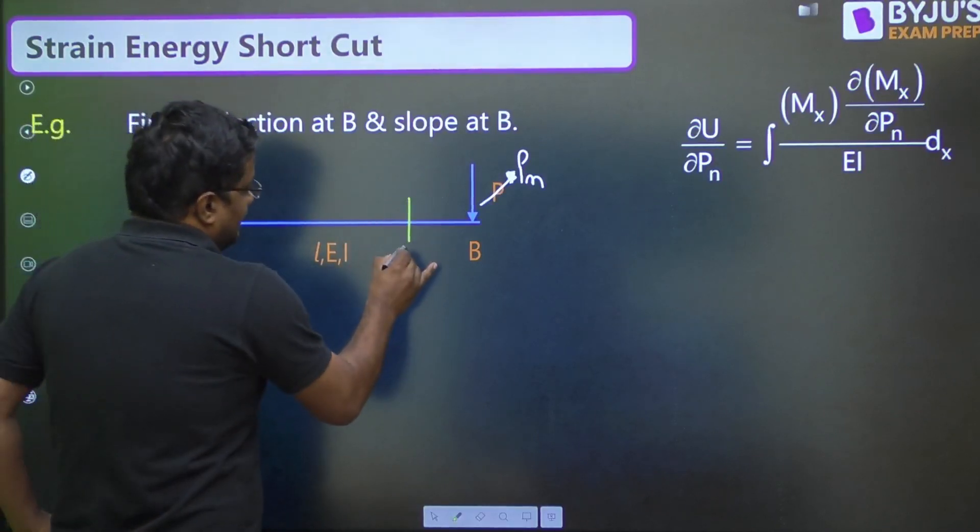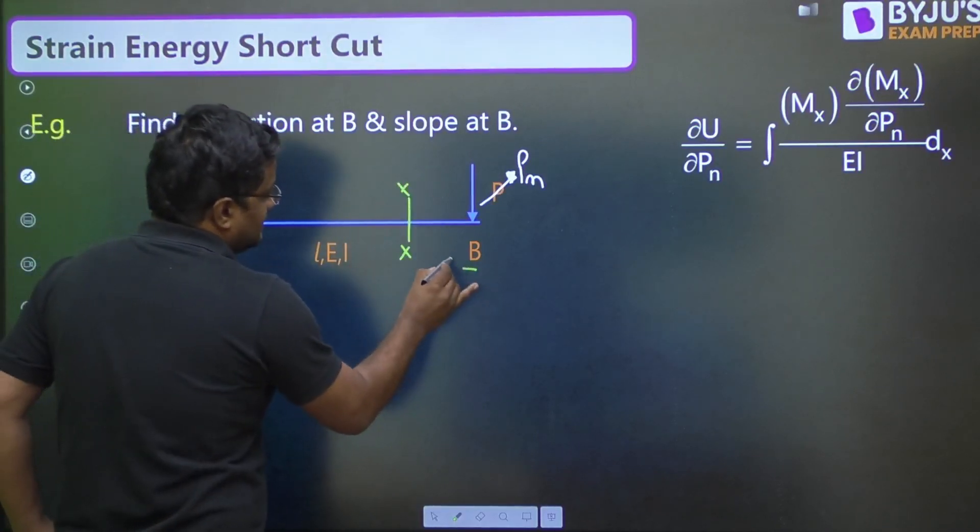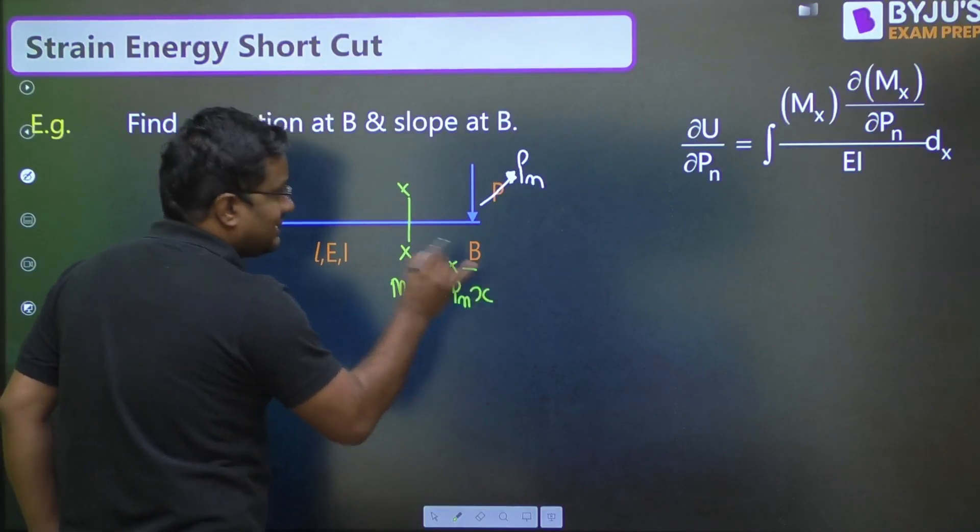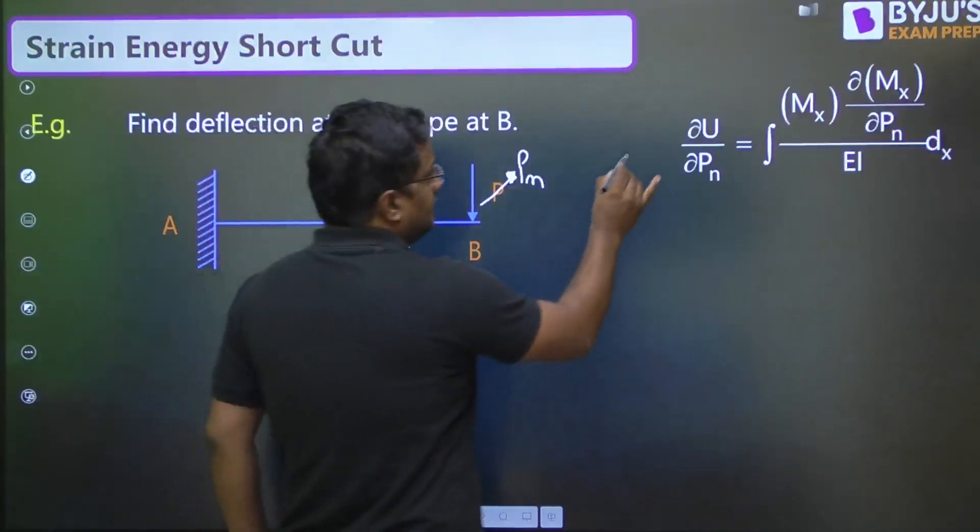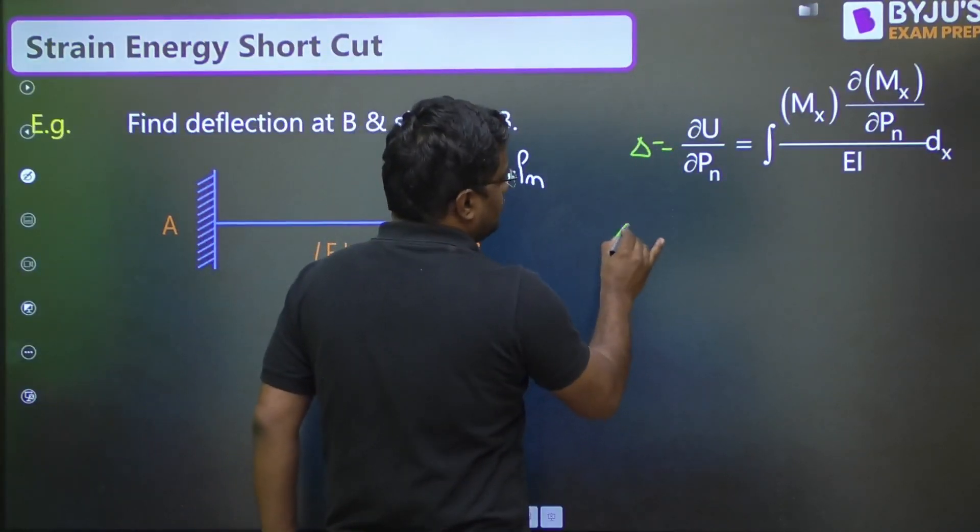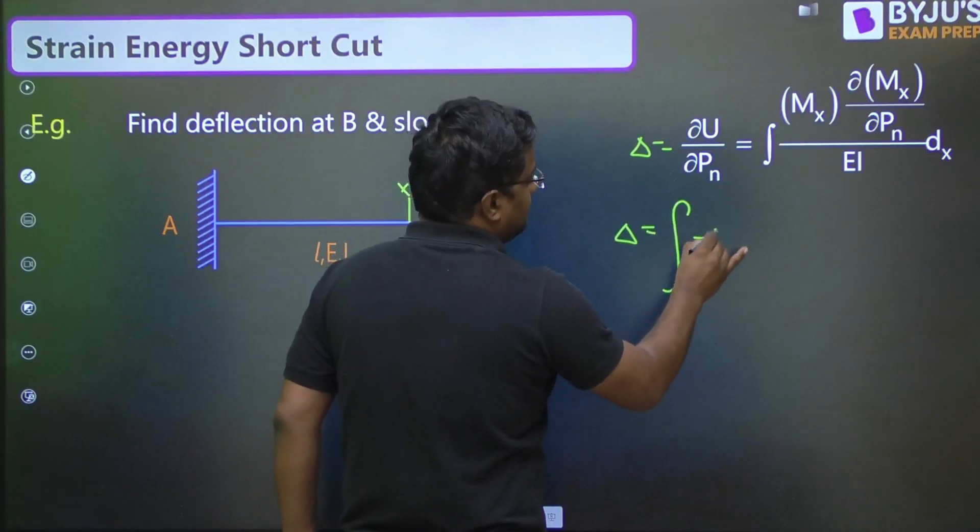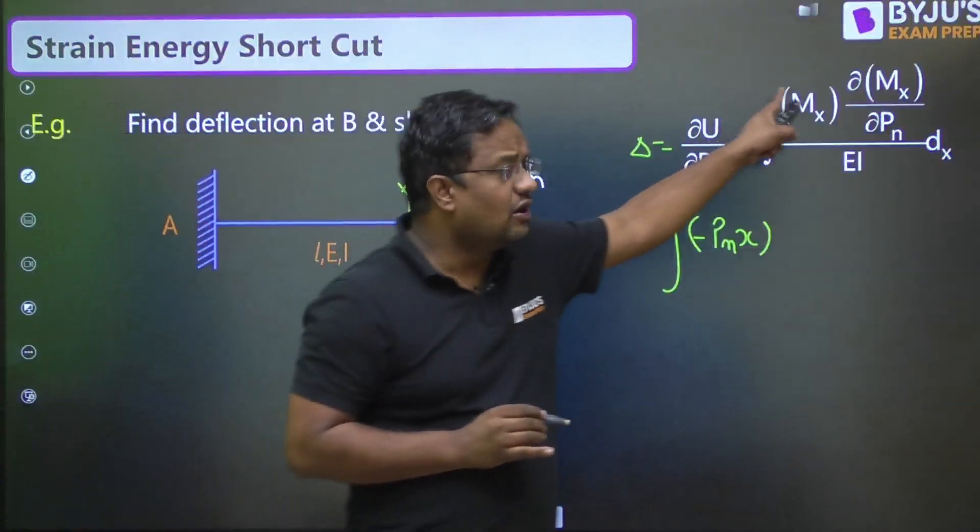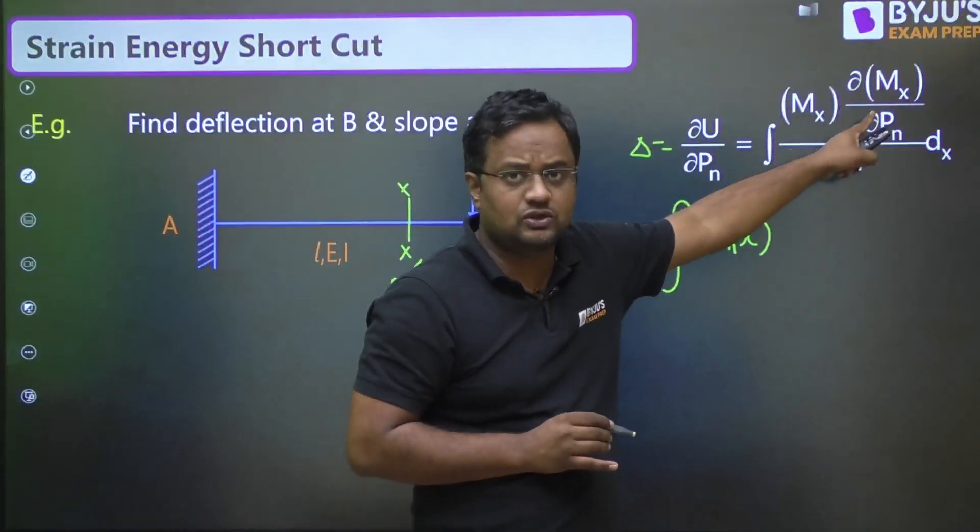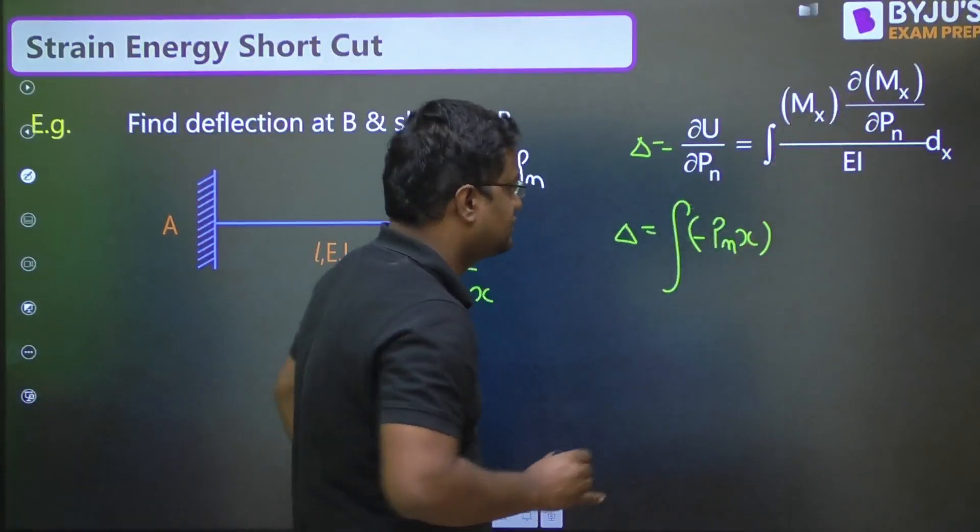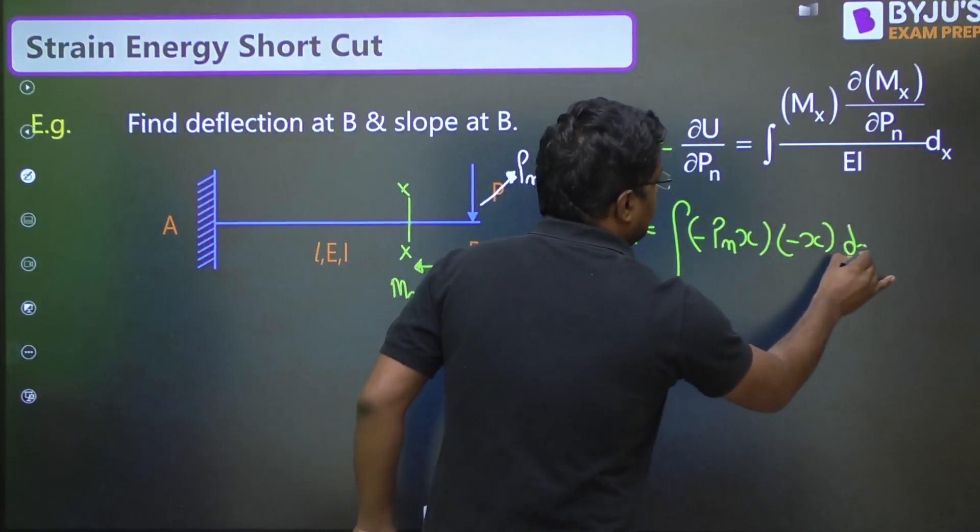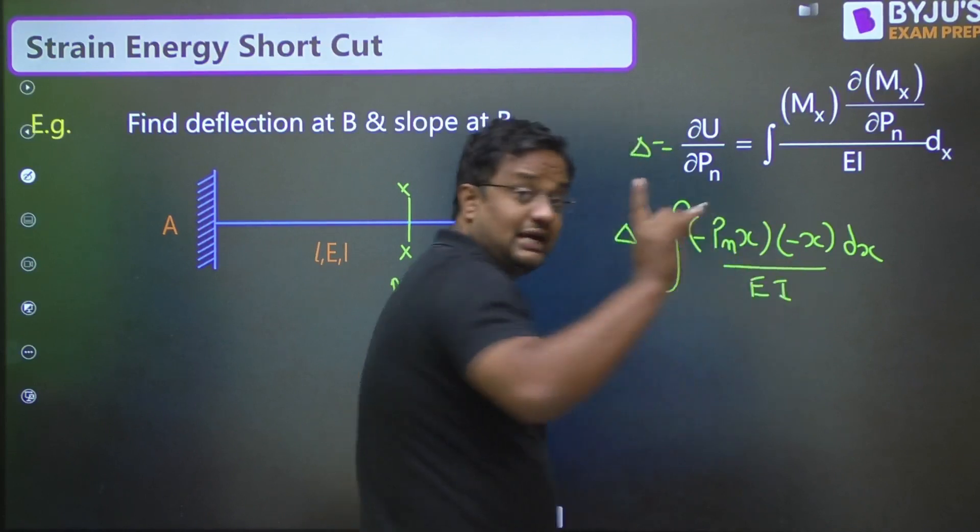At XX section, which is X distance from free end, the bending moment here, MX I am representing as bending moment, is minus PN into X. Then, deflection is, MX is bending moment at X section, minus PNX. Then, whatever written here, differentiate with respect to PN. So, it will be minus X, DX upon EI.